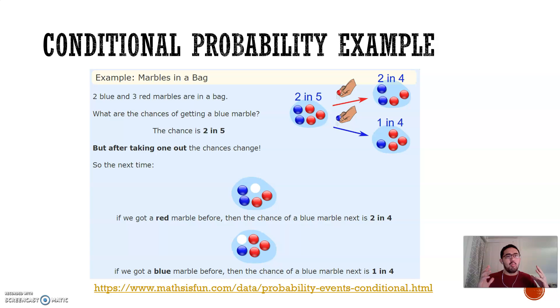Here's another one. If you have marbles in a bag, let's say you have five marbles. Three of them are red and two of them are blue. When you first pick out of the bag, the chance of getting a blue marble is two out of five.